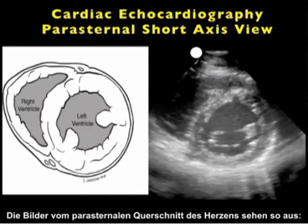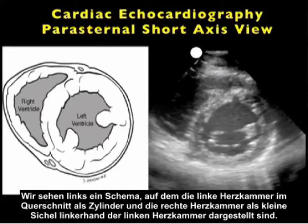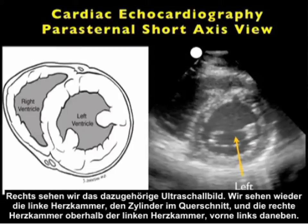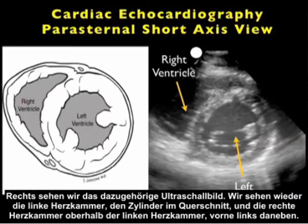Here's what the views from the parasternal short axis plane of the heart will look like. We see a pictorial showing the left ventricle cut in cross section as a cylinder, and the right ventricle is a little sliver just to the left of the left ventricle. We see a corresponding ultrasound image, noting the left ventricle as that cylinder cut in cross section, and the right ventricle above the left ventricle, more anteriorly and to the left.